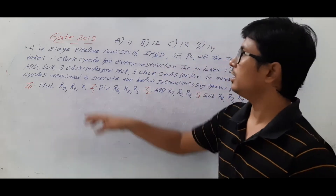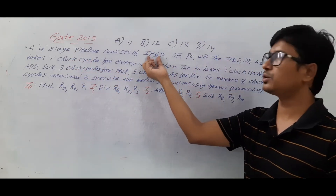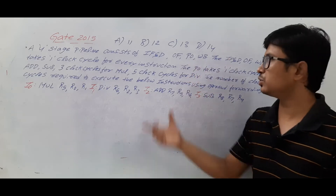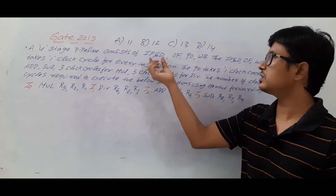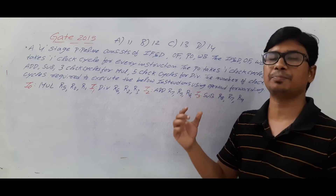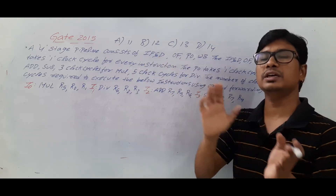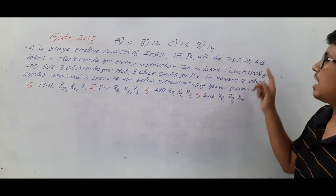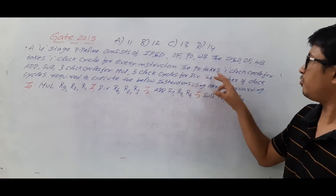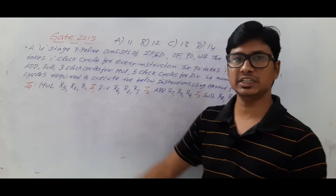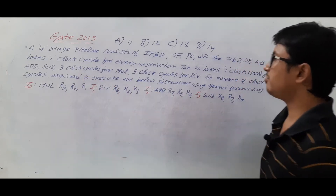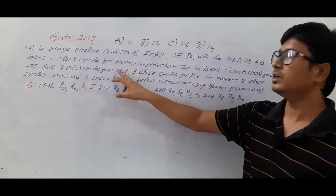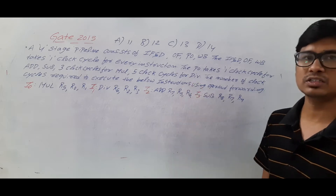Let me read out the question, then we will solve it. A four-stage pipeline consists of instruction fetch and decode — they are combined making it as one stage — operand fetch, perform operation, and write back. The instruction fetch and decode, operand fetch, and write back each take one clock cycle. The perform operation stage takes one clock cycle for addition and subtraction, three clock cycles for multiplication, and five clock cycles for division.